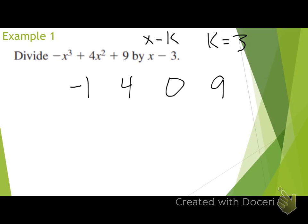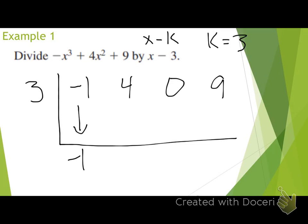I'm going to draw a little half box and put my k value of 3 on the left side. My first step: I'm going to bring down my first coefficient, negative 1. Now I'm going to multiply that negative 1 by my k value. What's negative 1 times 3? Negative 3. I'm going to put that negative 3 below my next coefficient. In that column — the 4 and negative 3 column — I'm going to add those two numbers. What's 4 plus negative 3? Positive 1.